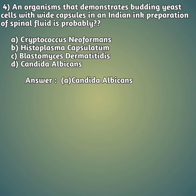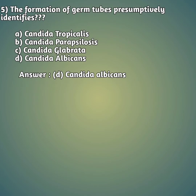Fifth question: the formation of germ tubes presumptively identifies which organism? Option A: Candida tropicalis; option B: Candida parapsilosis; option C: Candida glabrata; option D: Candida albicans. The right answer is option D, Candida albicans.